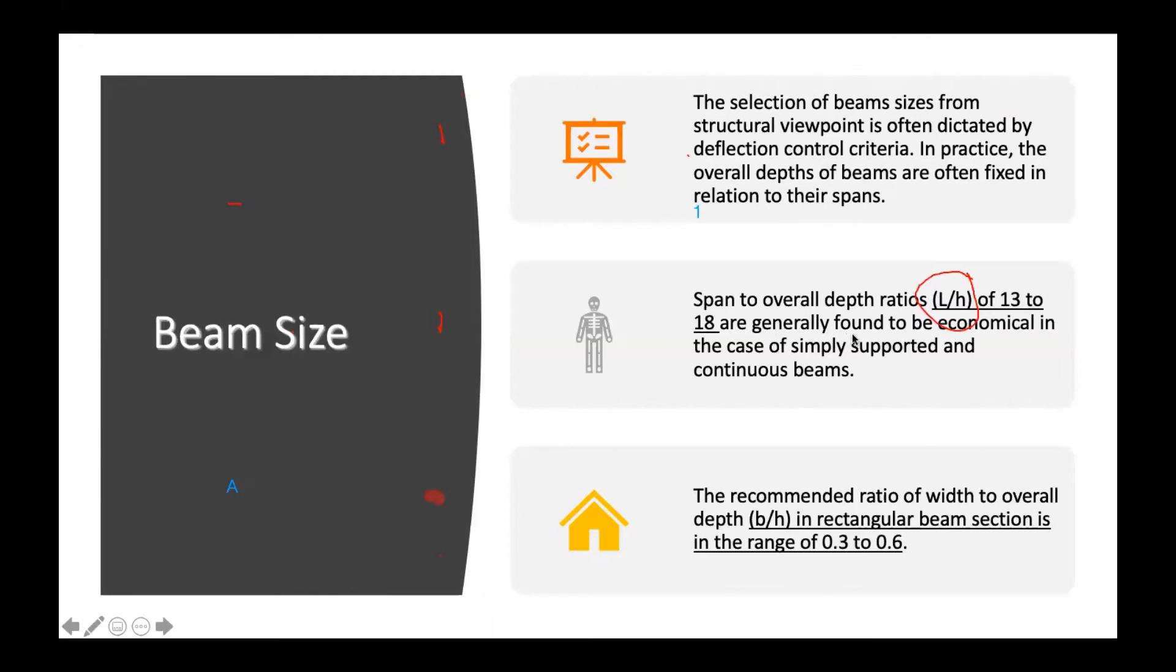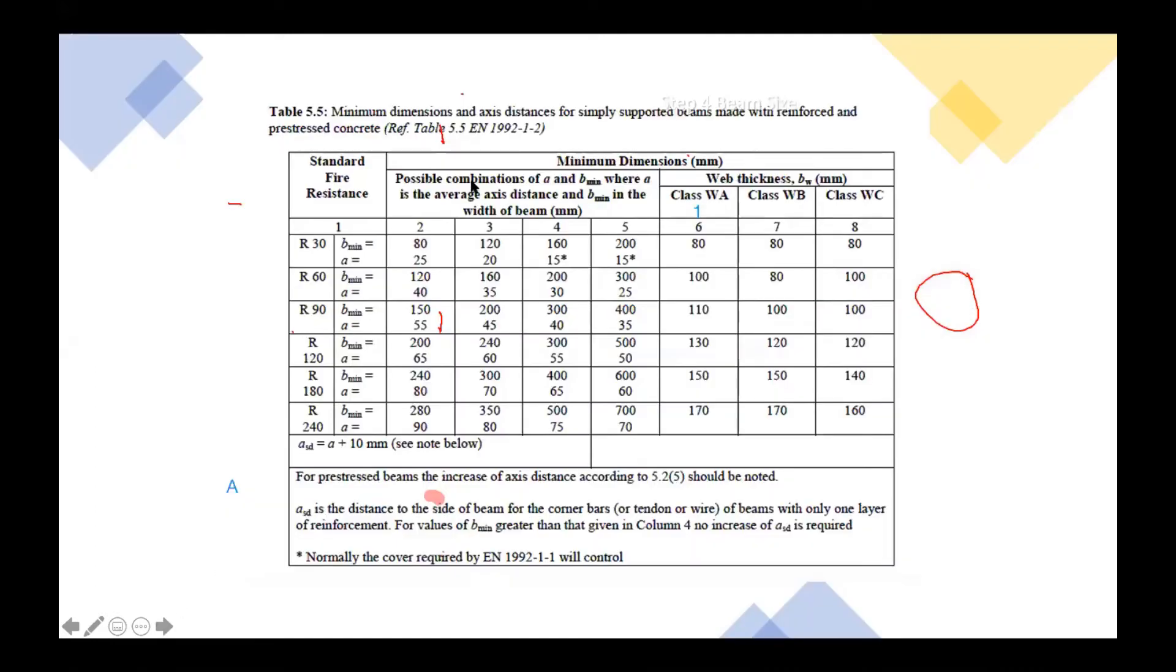They found that it is economical in the case of simply supported and continuous beam. And while B over H, the size of the beam BH, we can predict in the range of 0.3 to 0.6. Okay, let's look here.